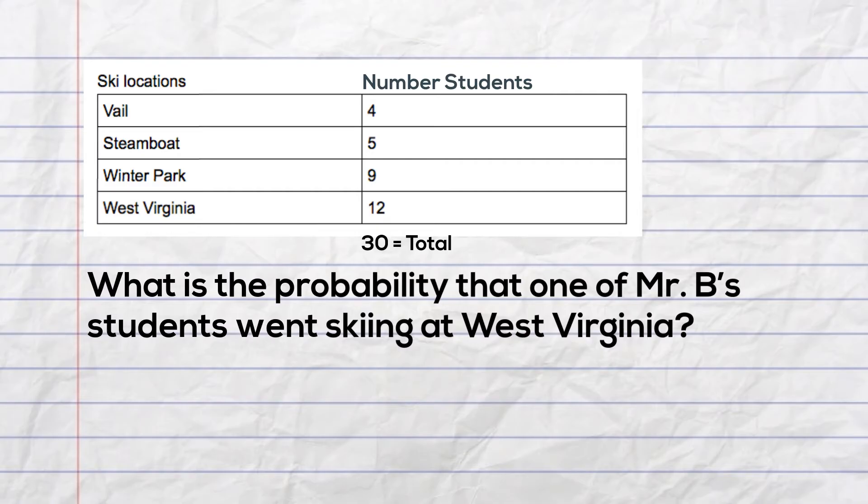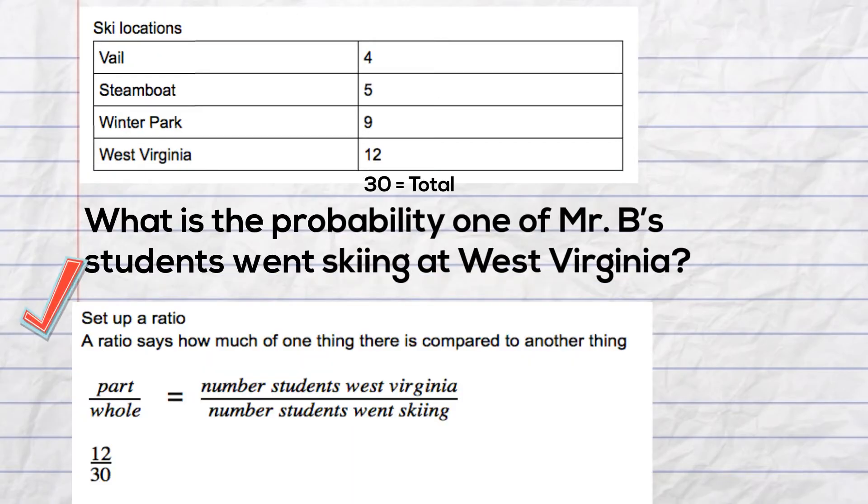To solve this, let's set up a ratio. A ratio says how much of one thing there is compared to another thing. In this example, we will use part over whole, which equals the number of students that went to West Virginia skiing over the total number of students that went skiing.